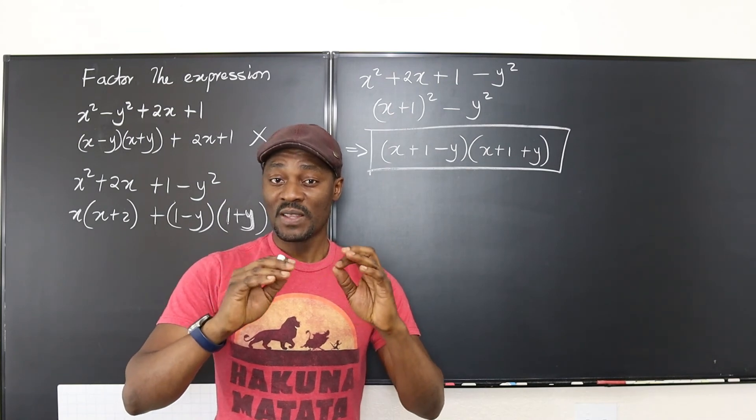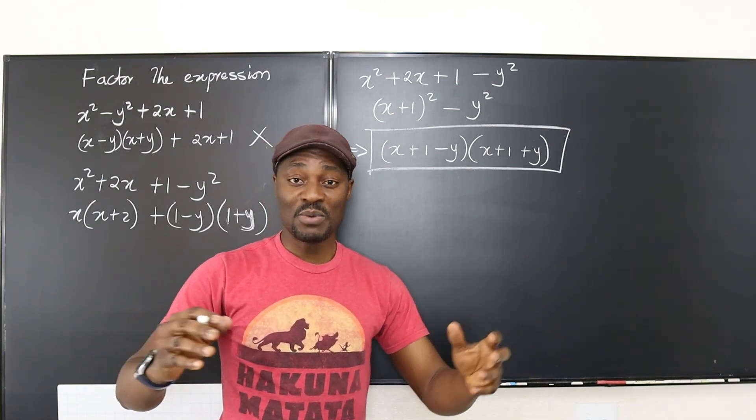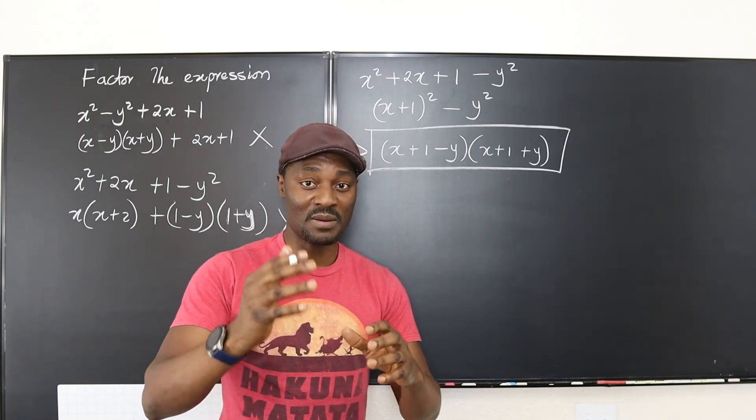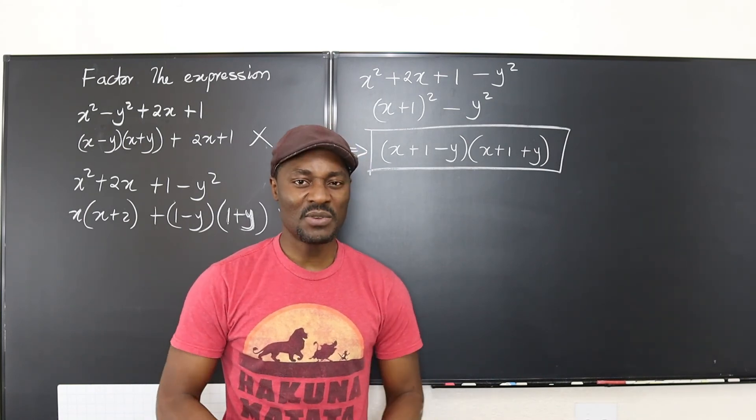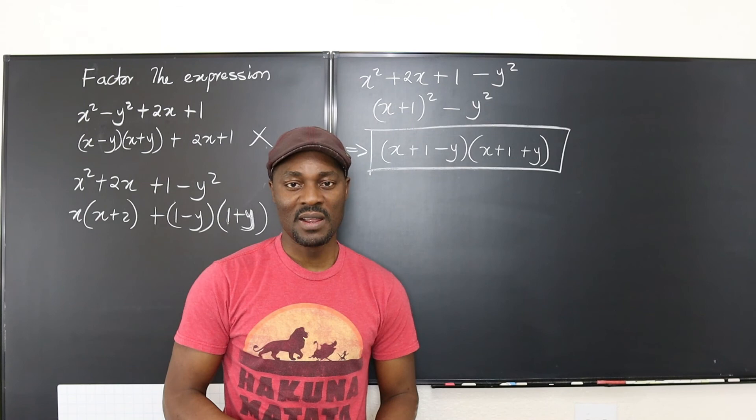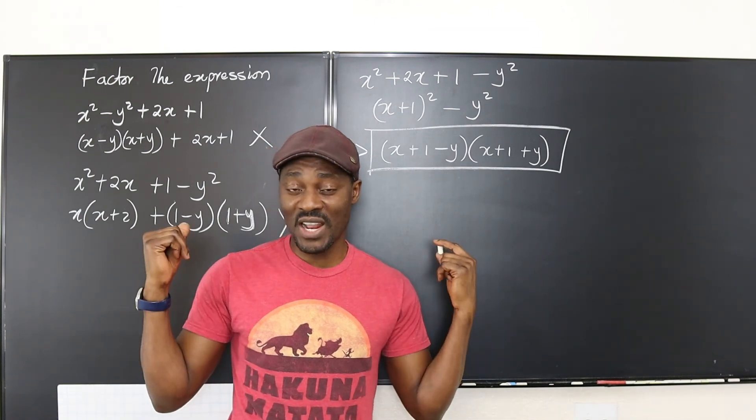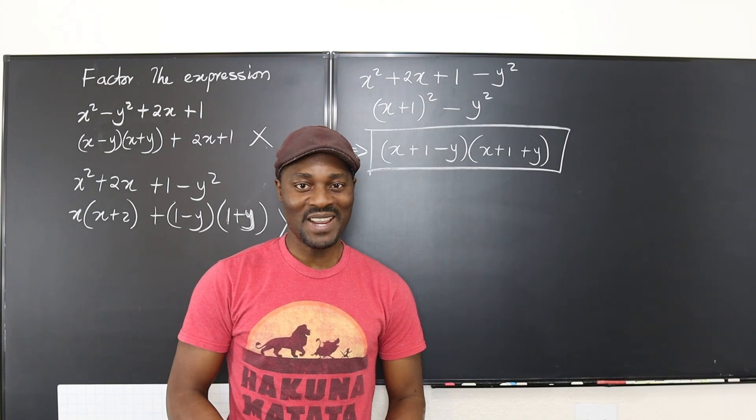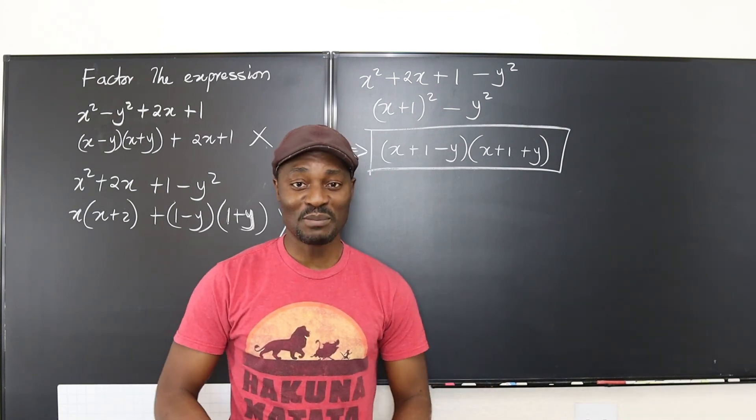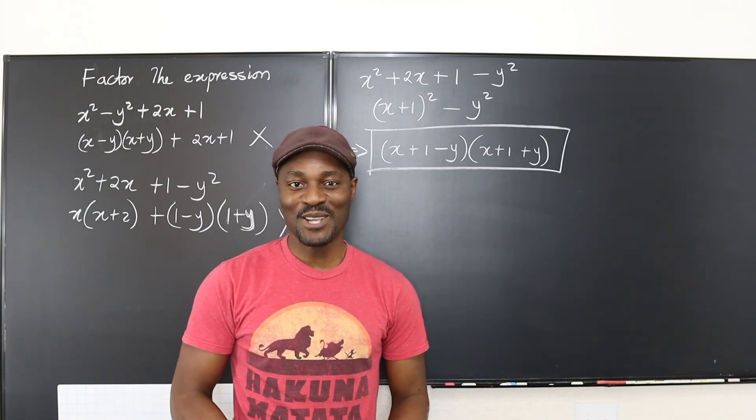Always look for the trinomial that could be a perfect square binomial. If it looks like a quadratic equation, try to see if you can factor it into a perfect square. Usually when you get questions like that, that's what you get. Don't stop learning—those who stop learning have stopped living. I'll see you in the next video. Bye bye.